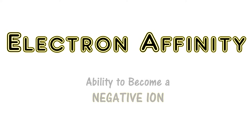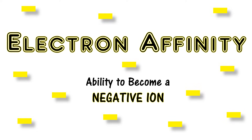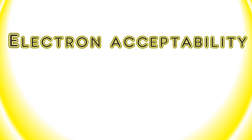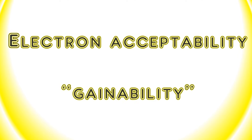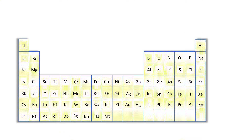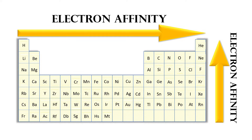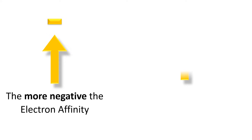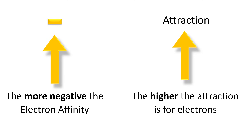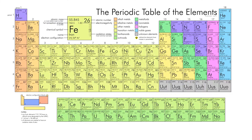The next periodic trend is electron affinity, or the ability to become a negative ion. You can remember it by 'electron acceptability' or 'gainability.' The general trend is: as you go from left to right along the periodic table, the electron affinity increases, as well as when you go from the bottom to the top of a group. The more negative the electron affinity number is for an atom, the higher the attraction it's going to have for electrons. However, there are exceptions to this rule.